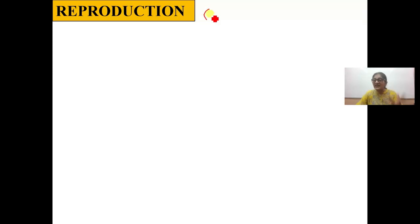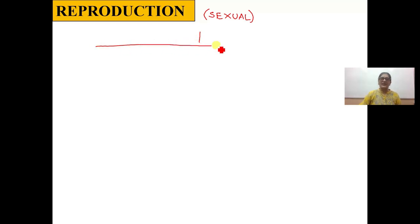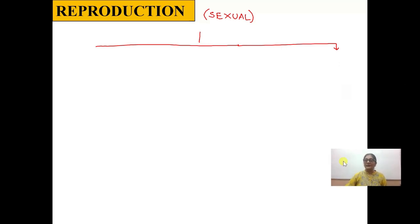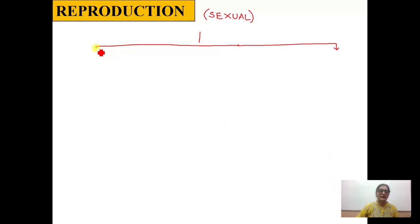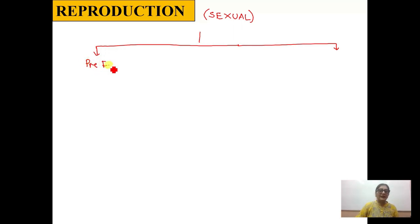In humans, reproduction is sexual reproduction. In any organism, be it a unicellular amoeba or a multicellular complex human being, all organisms that undergo sexual reproduction — the entire process of reproduction is divided into three phases. The first phase is called the pre-fertilization phase, the second is the fertilization phase, and the third is the post-fertilization phase.